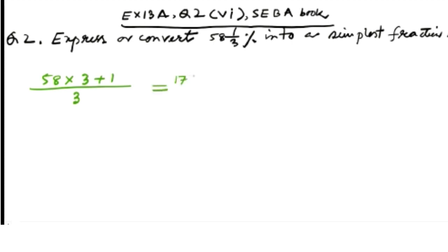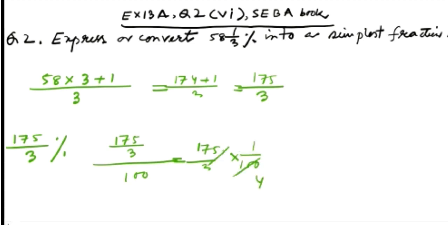So I'm now doing the first task, converting mixed fraction to improper fraction. So our question is 175 by 3 percent is our question. Converting from mixed to improper, and now we'll divide by 100 to remove this percent. So 175 by 3 divided by 100, and this is equal to 175 by 3 into 1 by 100.